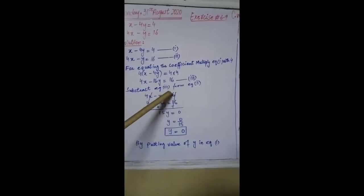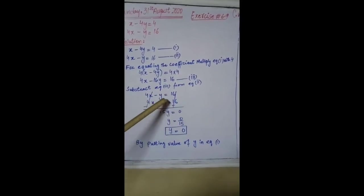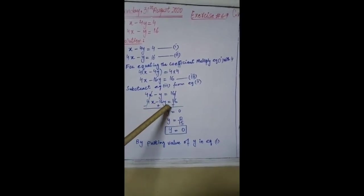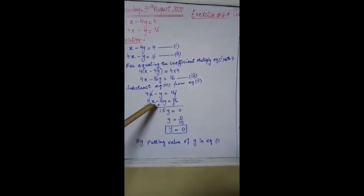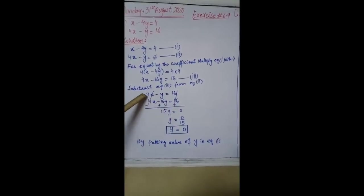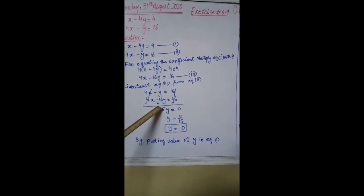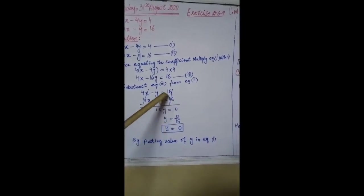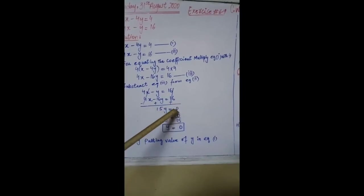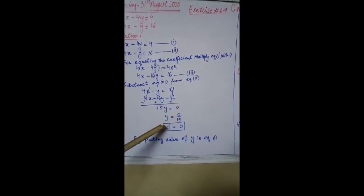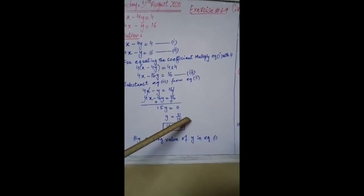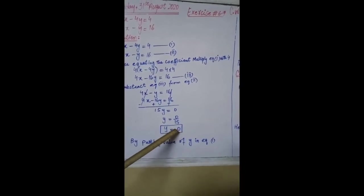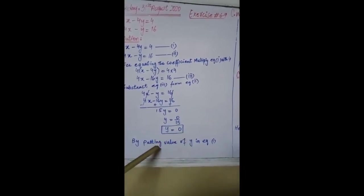Subtract equation 3 from equation 2: 4x - y = 16 minus 4x - 16y = 16. Signs are changed; 4x cancels with -4x. Subtracting -16y from -y gives 15y, and 16 - 16 = 0, so 15y = 0. Dividing by 15: y = 0 ÷ 15 = 0.